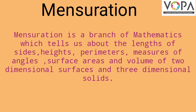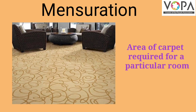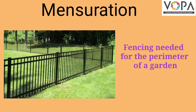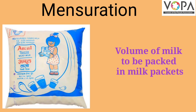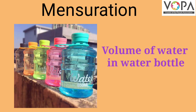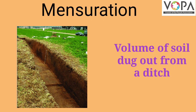Mensuration is useful in our day-to-day life too. For example, to find the area of paint required to paint a wall, area of carpet required for a particular room, fencing needed for the perimeter of a garden, the distance around a circular racetrack, volume of milk to be packed in the milk packets, volume of water in a water bottle, volume of cold drink in the can, and volume of soil dug out from a ditch.